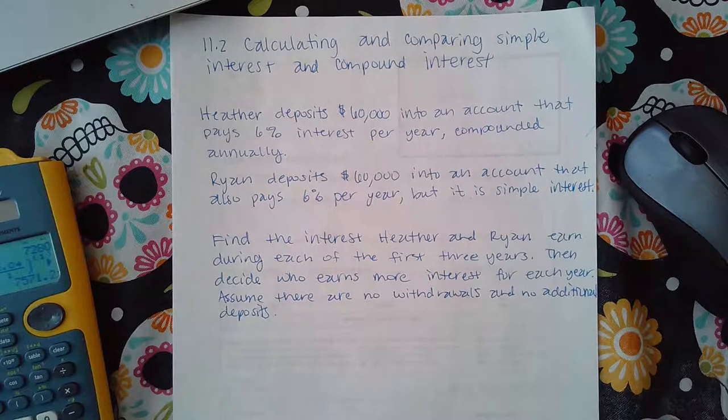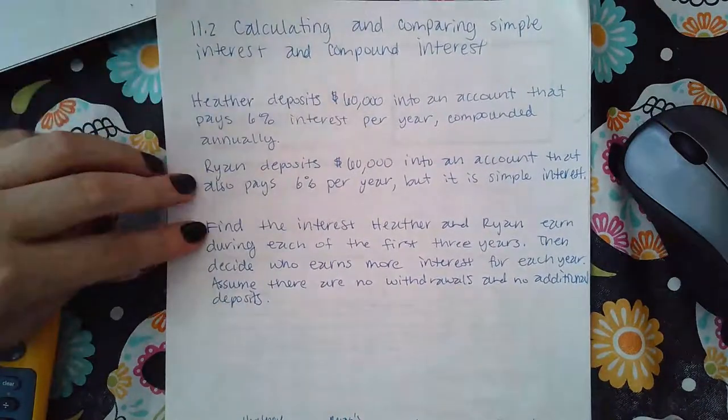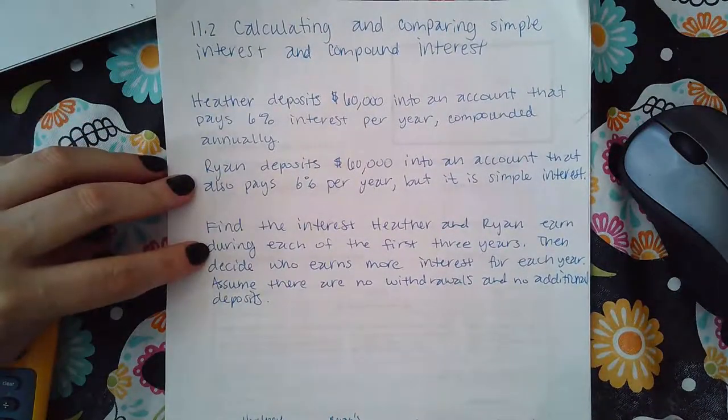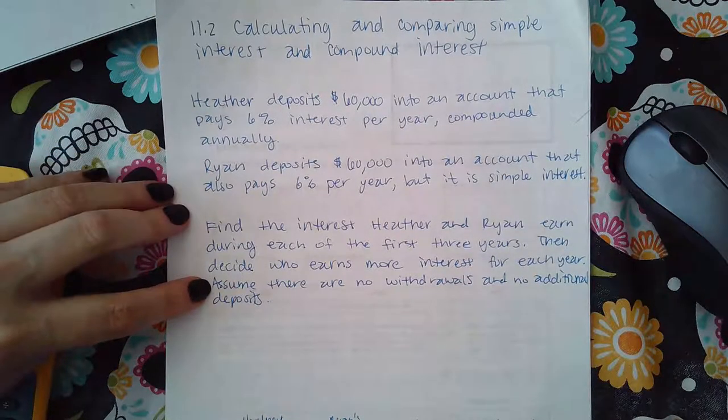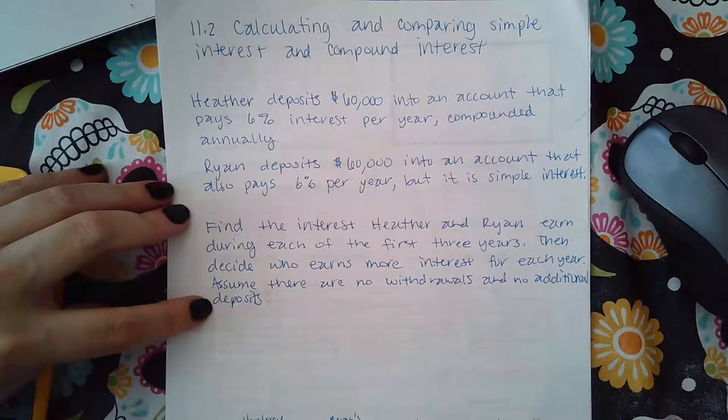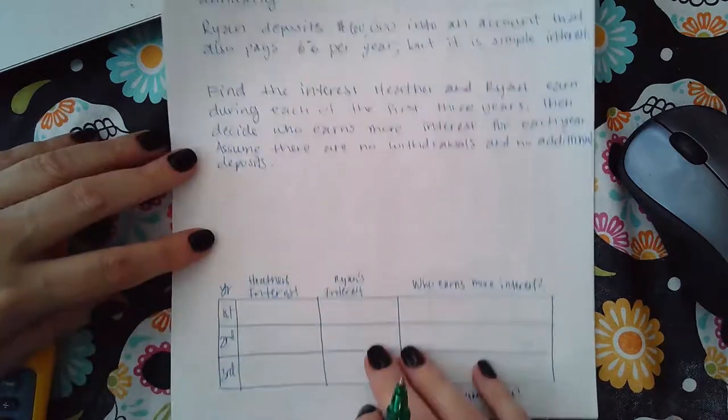But it is simple interest rate, which means you only calculate the interest at the very end. Okay, or it could be per year, but I'll show you what the difference is. So it says find the interest Heather and Ryan earned during each of their first three years, then decide who earns more for each year, assuming there are no withdrawals and no additional deposits.